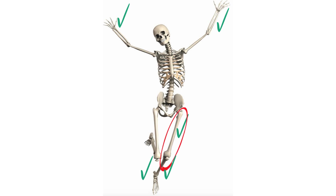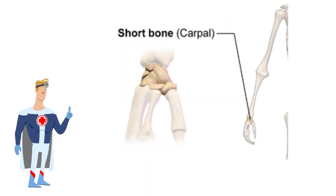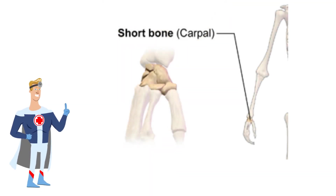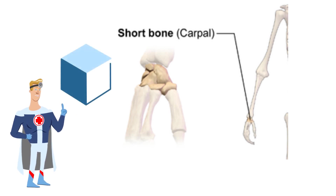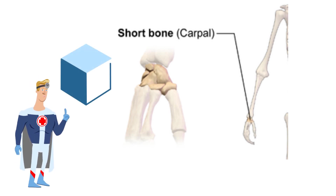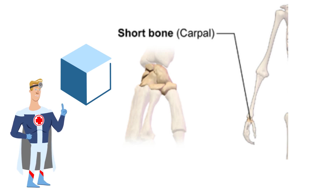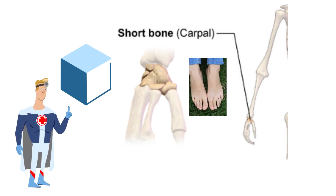The femur is the longest and strongest bone in your body. Short bones are fairly equal sized in width and length, similar to a cube. They are found mostly in your wrists and ankles. For example, your foot consists of 26 bones.